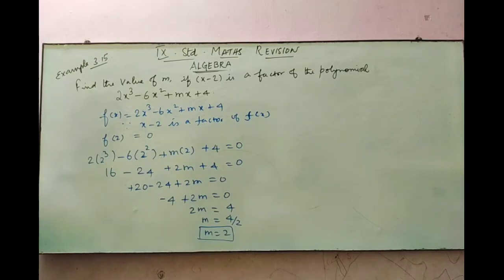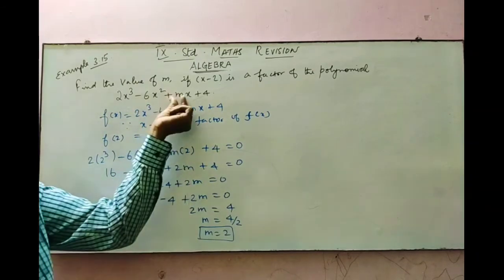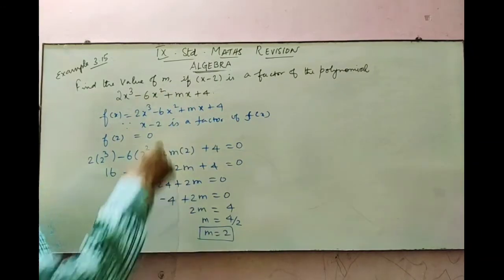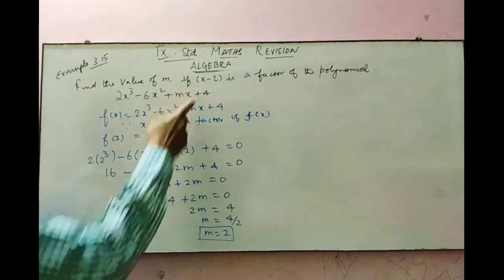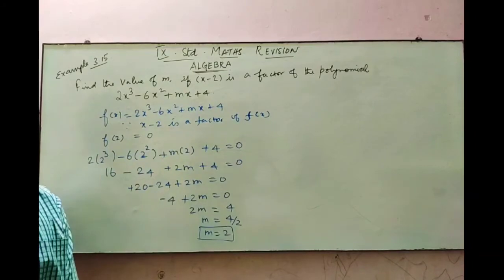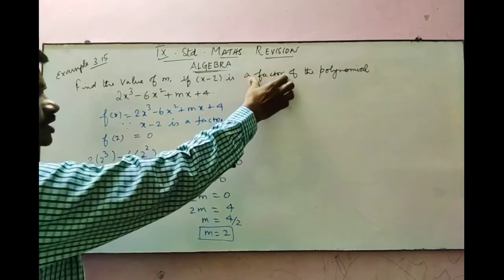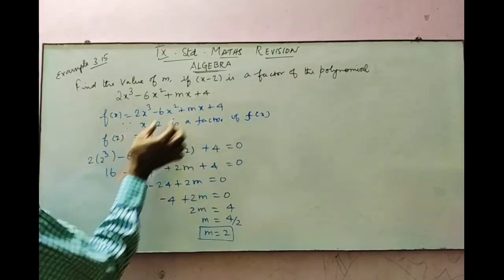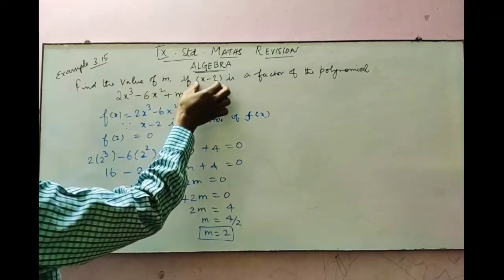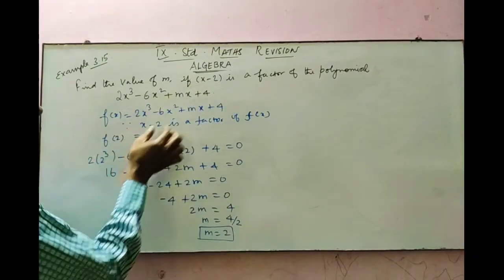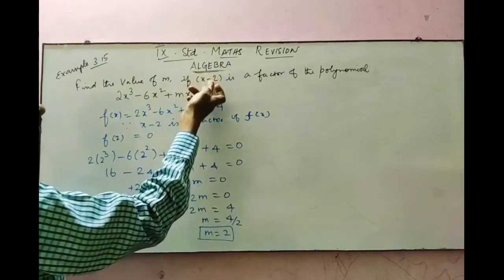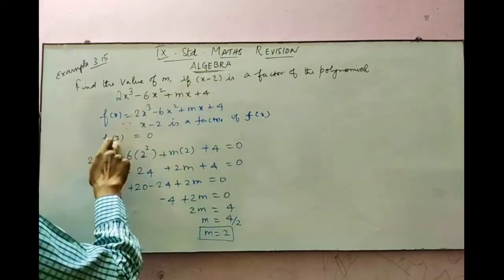This is the way of finding the value of any unknown constant in a polynomial using the factor theorem. If x minus 2 is a factor, then f of 2 equals 0. If x minus 3 is a factor, then f of 3 equals 0. If x minus 1, then f of 1. If x plus 1, then f of minus 1. You can use these conditions to find the unknown values.